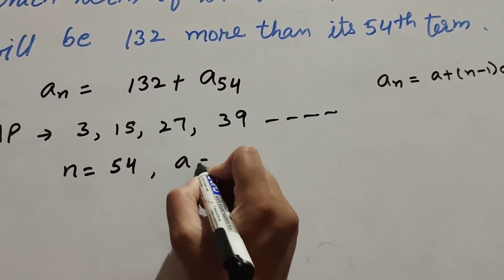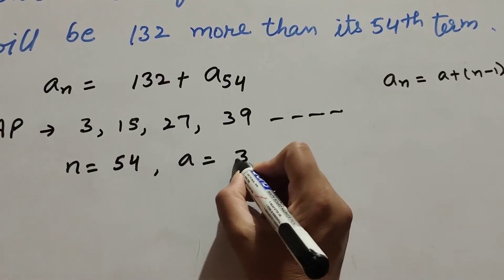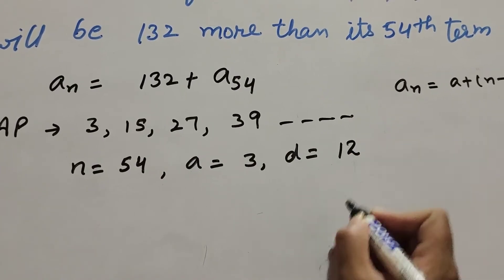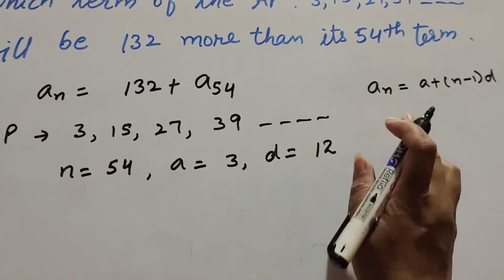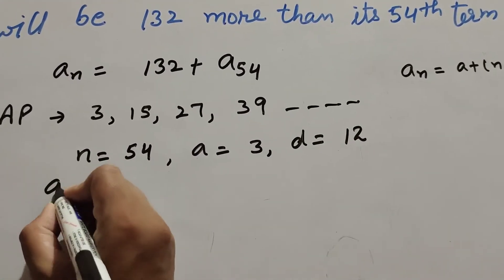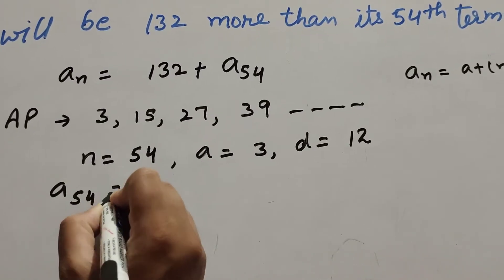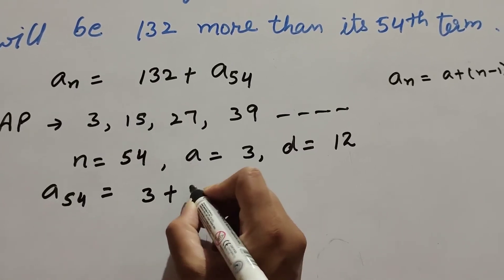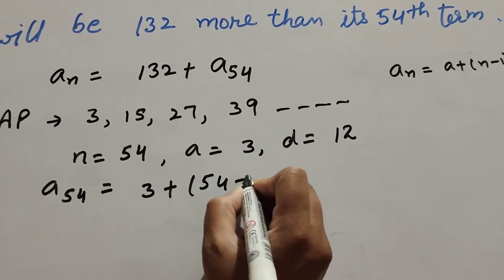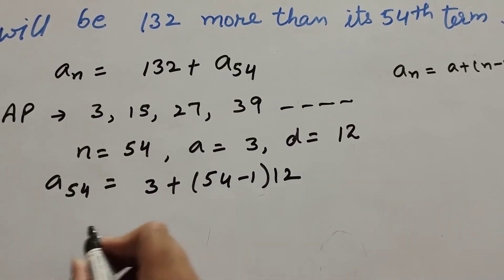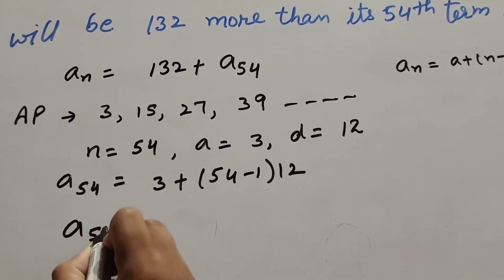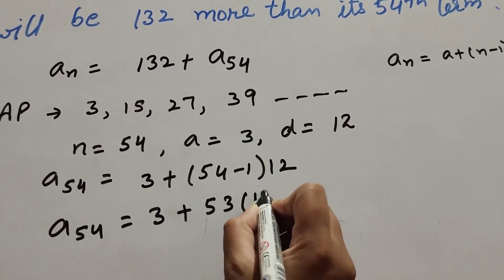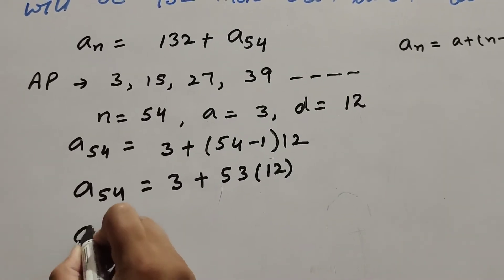Here n is equal to 54. The first term a is 3, and the common difference d is equal to 15 minus 3, which is 12. So a_54 equals 3 plus (54 − 1) into 12, that is 3 plus 53 multiplied by 12.